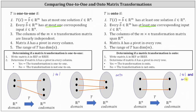Now let's look at the additional properties of one-to-one and onto transformations. A transformation is one-to-one if the columns of the transformation matrix are linearly independent, and onto if the columns span Rn. A transformation is one-to-one if matrix A has a pivot in every column, and onto if matrix A has a pivot in every row. A transformation is one-to-one if the range of T has dimension n (the number of columns), and onto if the range of T has dimension m (the number of rows).